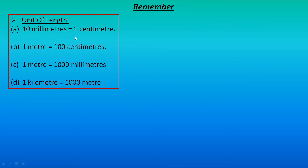The relation between millimeters and centimeter is 10 millimeters makes 1 centimeter. You all have a scale — there are 10 lines in between 1 centimeter, and those lines indicate millimeters. The next point is: 1 meter is equal to 100 centimeters, 1 meter is equal to 1000 millimeters, and 1 kilometer is equal to 1000 meters.